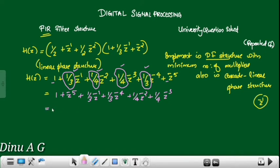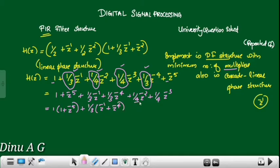If you multiply it out, you will get the minimum number of multiplier structure. That is: 1 plus z raised to minus 5, plus 1/3 common — z inverse plus z raised to minus 4 — plus 1/4 common — z raised to minus 2 plus z raised to minus 3.